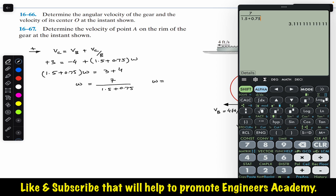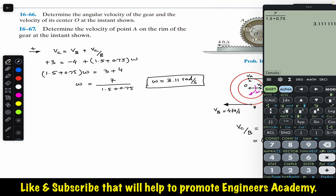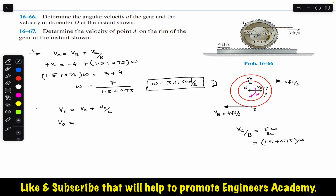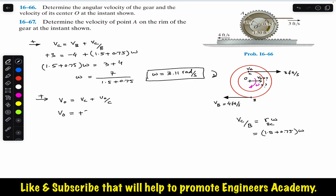The angular velocity of the gear is omega = 3.11 rad/s in the clockwise direction. Now we find the velocity of center O. We can write V_O in terms of V_C: velocity of C equals velocity of O plus velocity of C relative to O — or equivalently, we write V_C = V_O + V_O relative to C. Towards the right is positive, so V_C is plus 3.